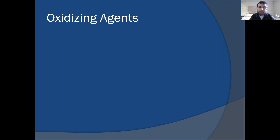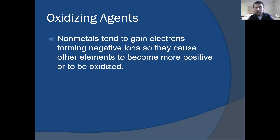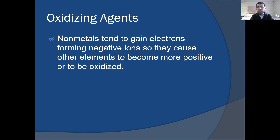Now let's look at our oxidizing agents. Remember, the oxidizing agent is the substance that's being reduced. Your good oxidizing agents tend to be non-metals, because non-metals tend to gain electrons. When they gain electrons, they form negative ions, and as a result they can cause other elements to become more positive or to be oxidized. Going back to the sodium and chlorine example, chlorine works really well because it really wants to gain an electron. When it gains that electron it's reduced, but it had to gain the electron from somewhere, which meant that the other element lost an electron. So non-metals tend to be very good oxidizing agents.